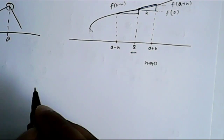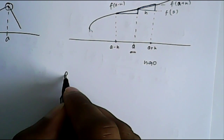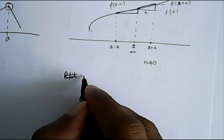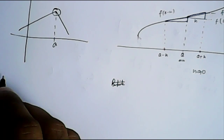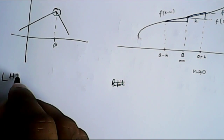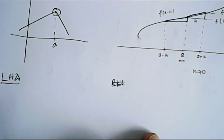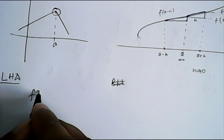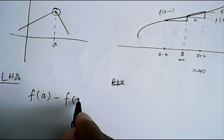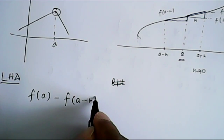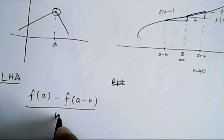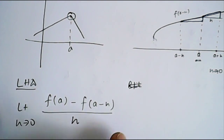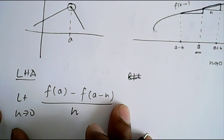So let's find out first the left hand derivative. The left hand derivative will be equal to f of a minus f of a minus h, upon h, where limit h tends to zero. This value will give us the slope, or the left hand derivative.